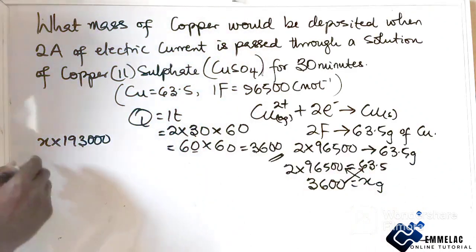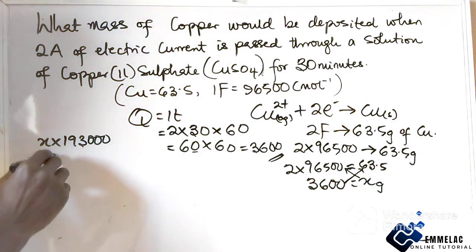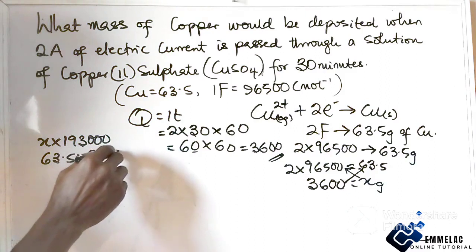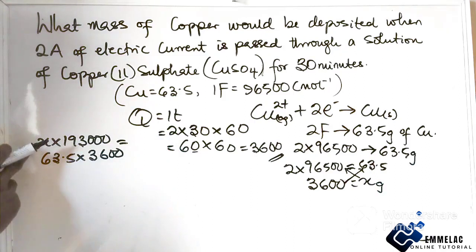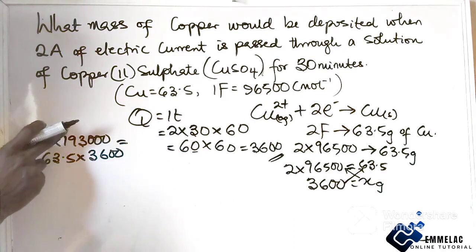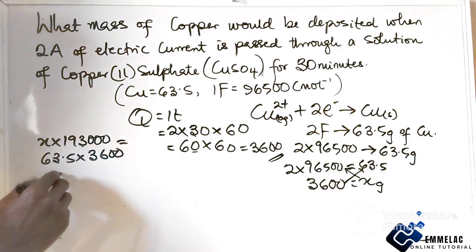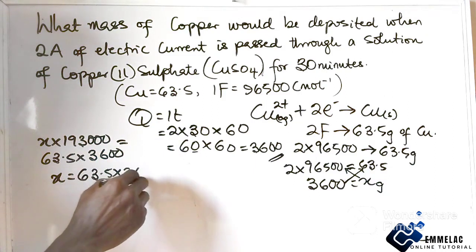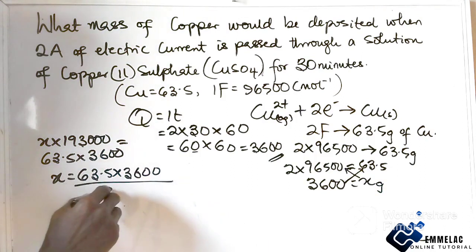So 63.5 times 3600 equals 228600. Making x the subject of the formula, we divide by 193000: x = (63.5 × 3600) ÷ 193000.